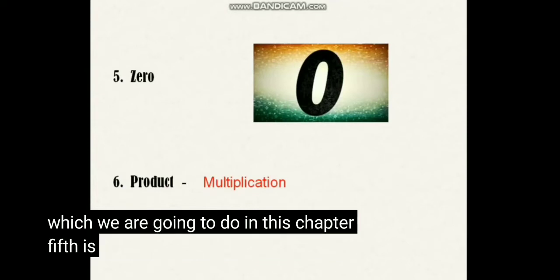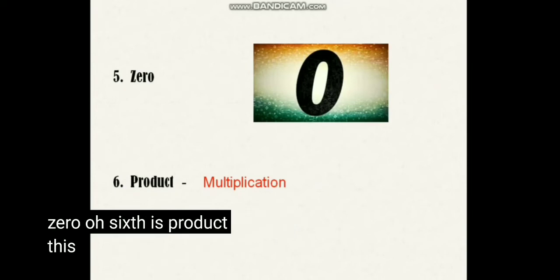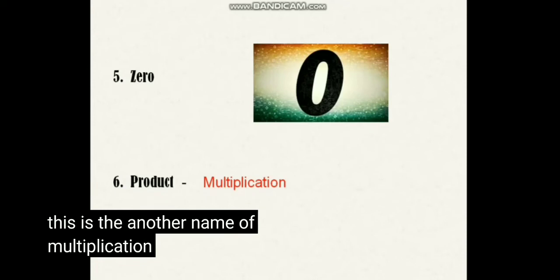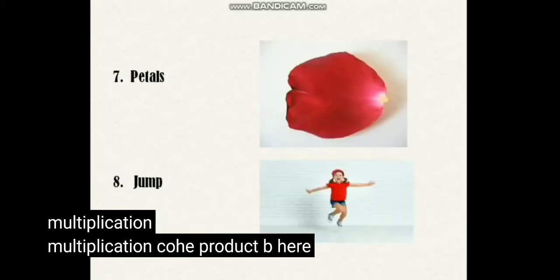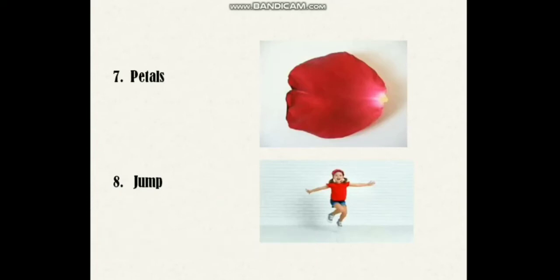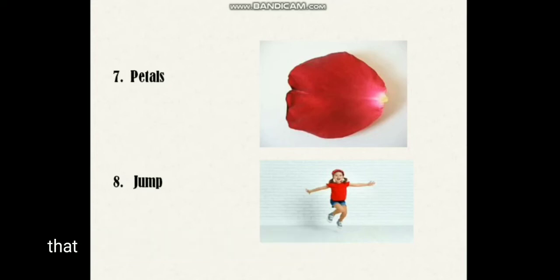Fifth is Zero — this is how we write Zero. Sixth is Product — this is another name for Multiplication; Multiplication को ही Product भी बोलते हैं। Seventh is Petals — Petals means पंखुड़ी; flower की पंखुड़ी होती है, उसे English में कहते हैं Petals. Eighth is Jump — आप सब दिन भर कूदते रहते हैं, that is called Jump.